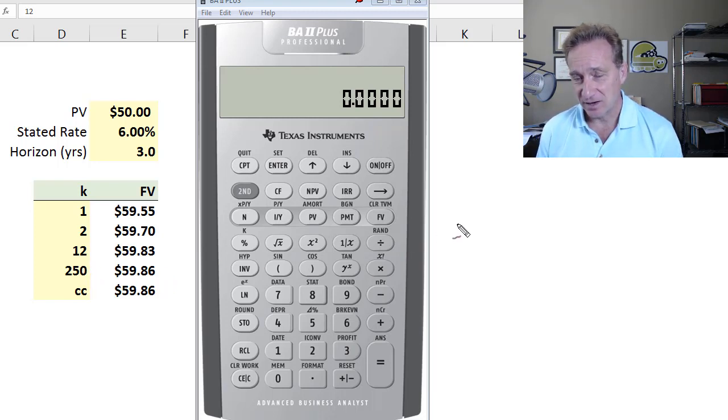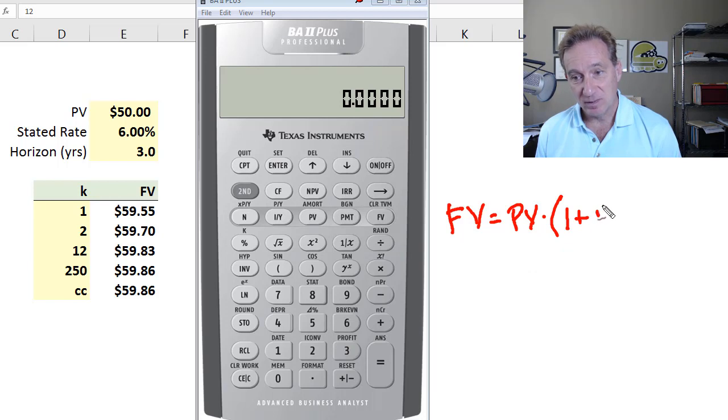Before I use the calculator, let's just remind of the general format here, where we say future value is equal to the present value multiplied by the quantity 1 plus the rate divided by k, the periods per year, raised to the power of t, that's our horizon, in this case three years. But to be consistent, we need to multiply that by k, right?